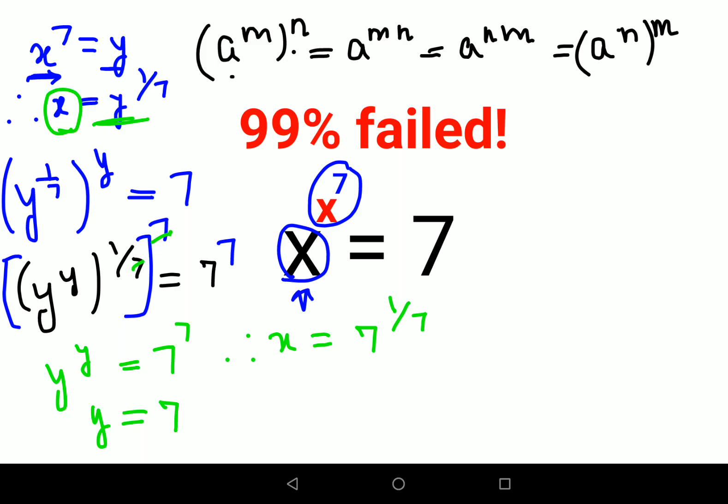So now let's put this over here and check whether we are getting the value of 7 or not. So we have x which is 7 raised to 1 upon 7. And everything is raised to x raised to 7. x raised to 7 is nothing but just y. So let's put it as 7.